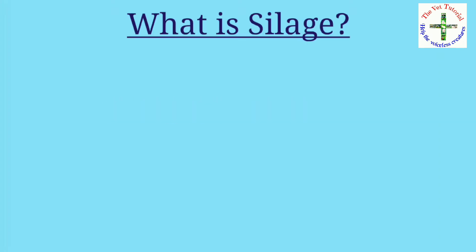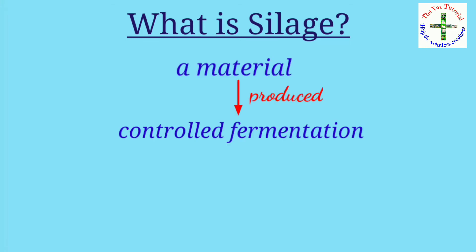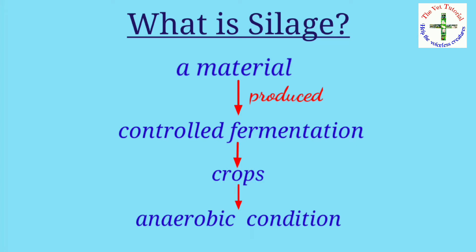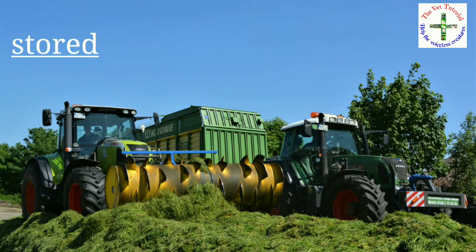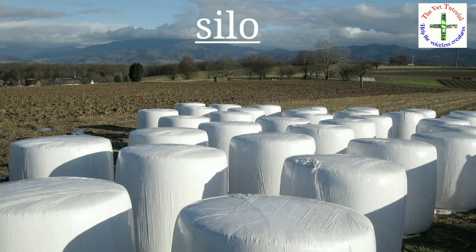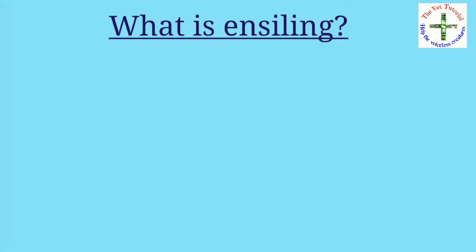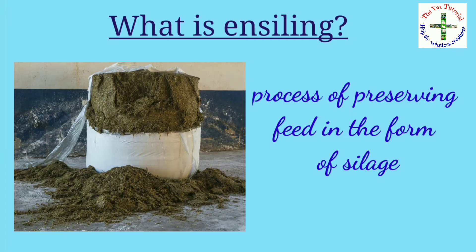Silage is defined as the material produced by controlled fermentation of crops under anaerobic condition. The green fodder harvested at the proper stage is stored, packed, and compressed in a silo, then tightly covered to prevent contact with fresh air.